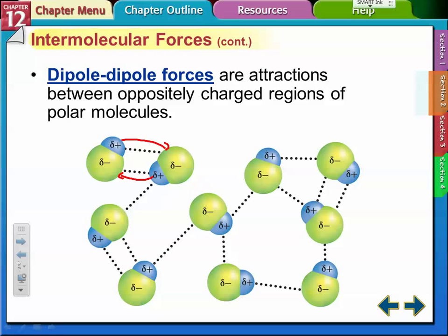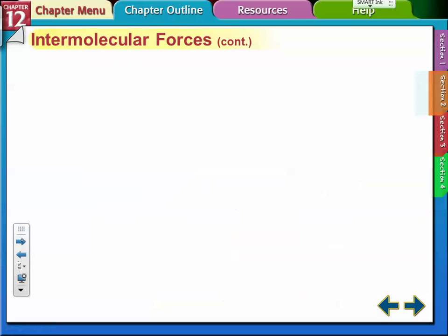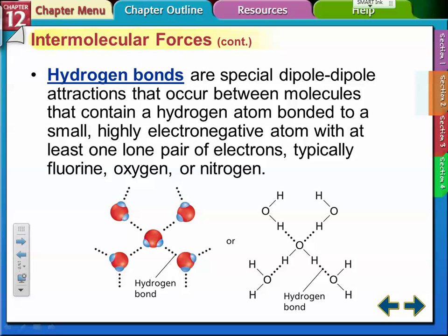Hydrogen bonds are special dipole-dipole attractions that occur between molecules that contain a hydrogen atom bonded to a small, highly electronegative atom with at least one lone pair of electrons. Typically, hydrogen bonds occur between fluorine, oxygen, and nitrogen. Fluorine, oxygen, and nitrogen are the three elements that hydrogen combines with to form hydrogen bonds.